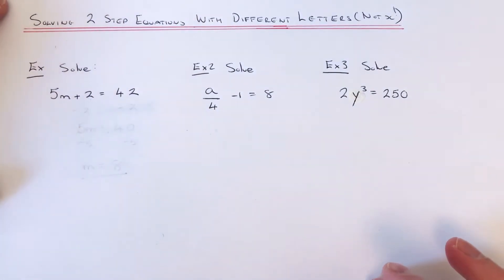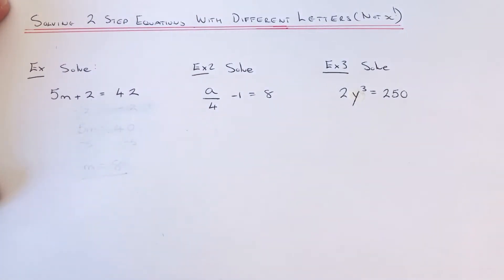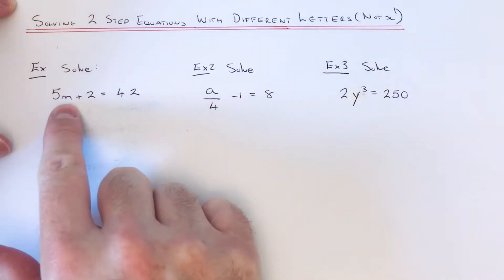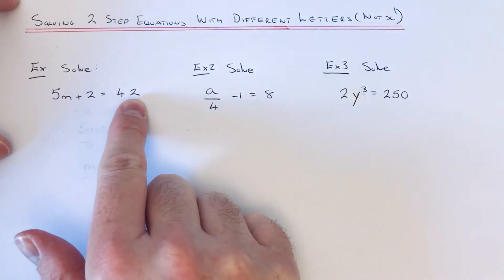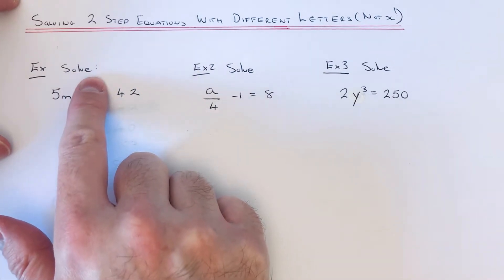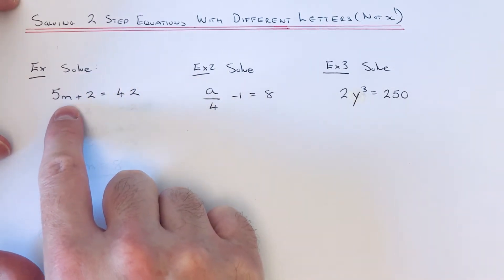Today I'm going to show you how to solve two-step equations which contain different letters other than x. So let's have a look at the first example. So we've got to solve the equation 5m plus 2 equals 42. So solve means we need to work out the value of the missing letter, which in this case is the letter m.